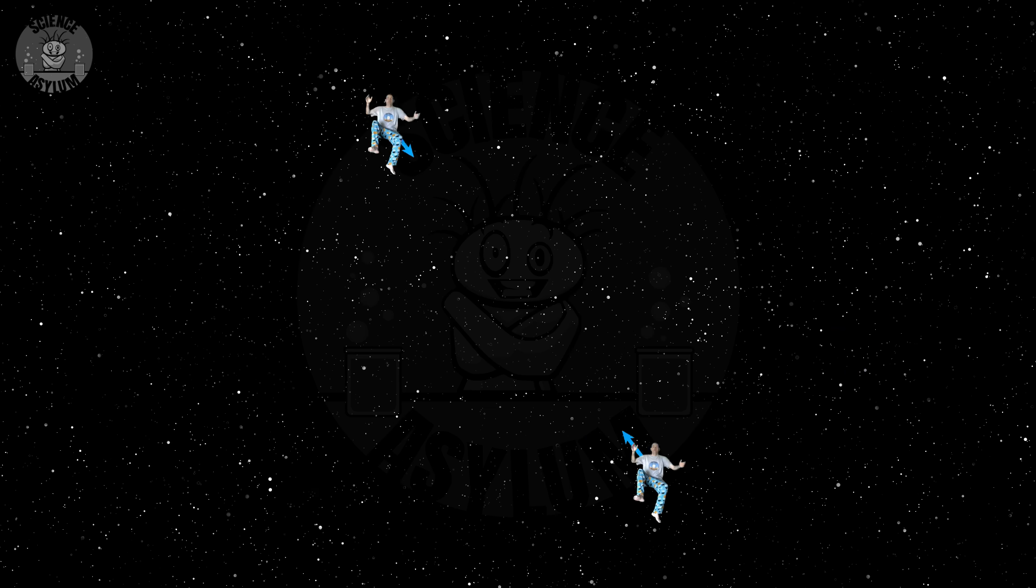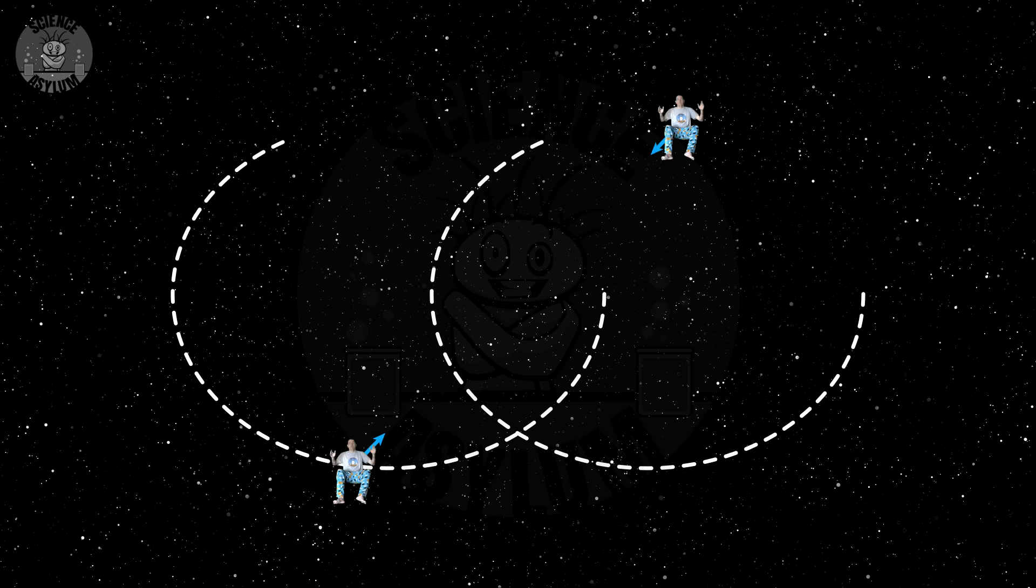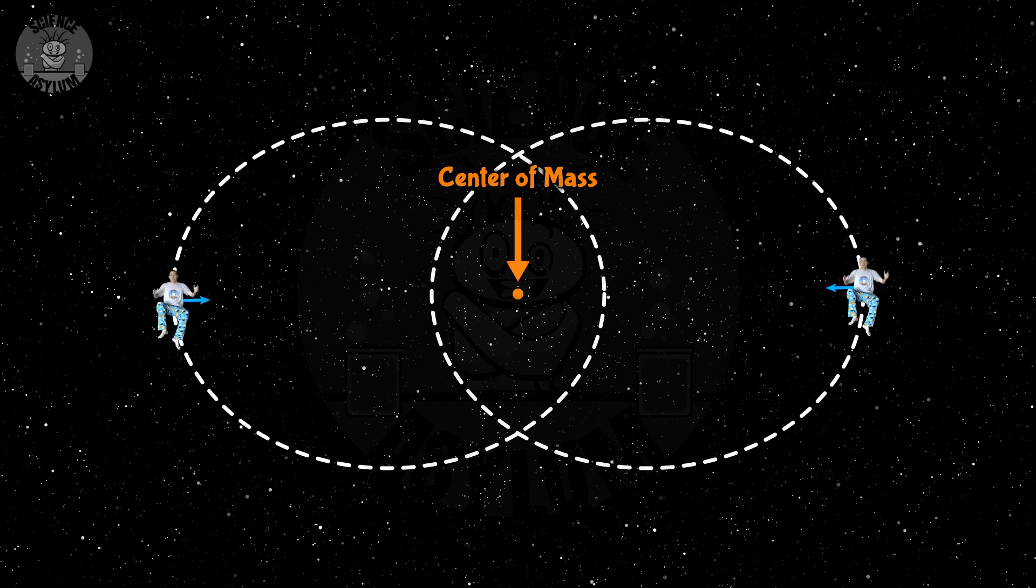Consider our two clones again. They might be falling toward each other, but let's imagine for a minute that they aren't. Let's imagine that they're orbiting a common center of mass instead. Believe it or not, orbits are way easier to solve than free fall paths.